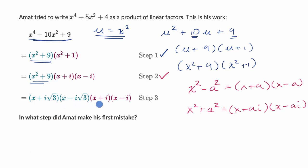And now let's go to step 3. So in step 3, no change to this part of the expression, and it looks like Amat is trying to factor x squared plus 9 based on the same principle. Now, x squared plus 9 is the same thing as x squared plus 3 squared. So if you use this exact same idea here, if you factor it, it should be x plus 3i times x minus 3i.